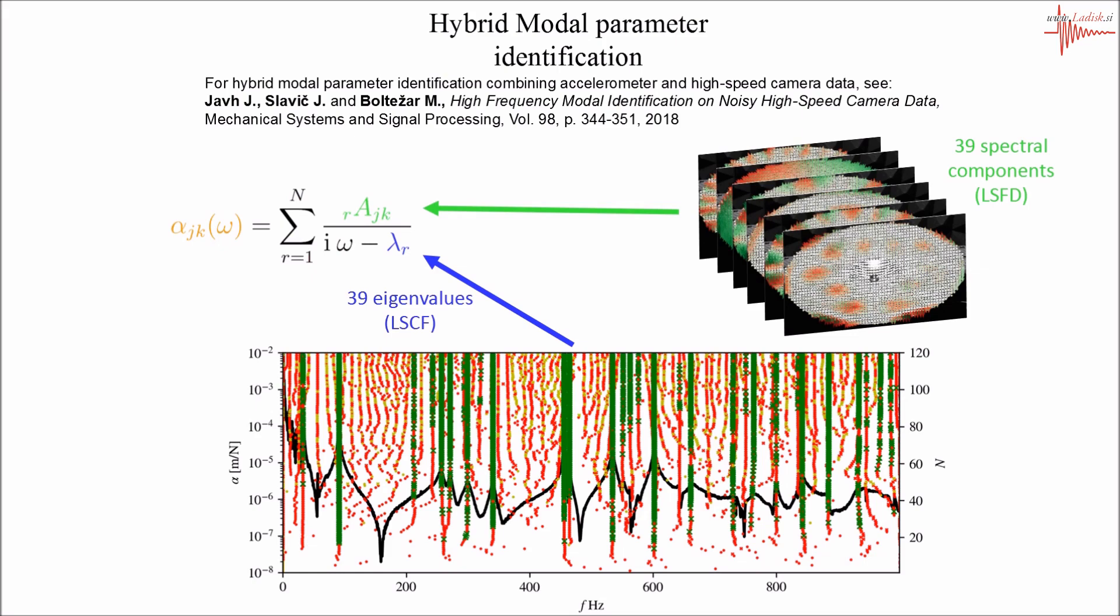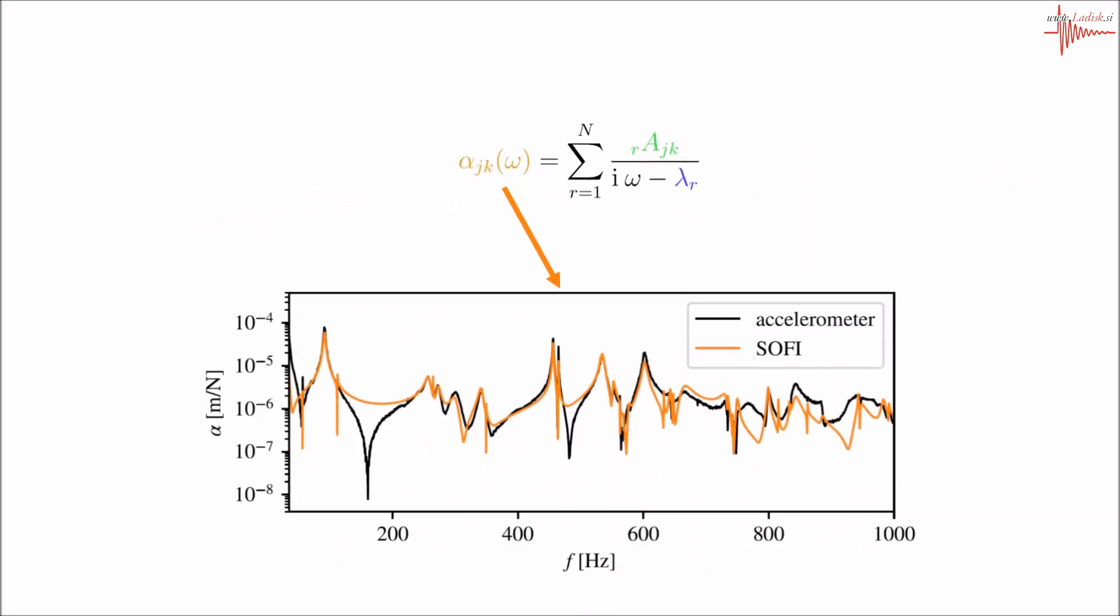From the identified model parameters, frequency response functions can be reconstructed. This is the reconstructed frequency response function for a point coinciding with the accelerometer. Black is the accelerometer measurement and orange is the response reconstructed from SOFI full-field model constants and accelerometer eigenvalues.